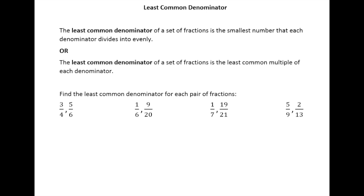As we go through here, we'll look at some different strategies for finding the least common denominator. First, let's look at three-fourths and five-sixths. Just like with the least common multiple of two numbers, if you can just see what the answer is without doing much work, that's fine. You might look at four and six and realize that 12 is the smallest number that both four and six go into evenly. If you know that right off the bat, that's great — the answer is 12.